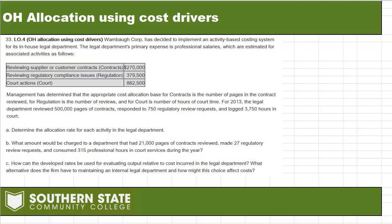If it uses a lot of technology, it generates a lot of overhead, and generally speaking, ABC is going to be a better map for what you're trying to do. In this problem, we have Wambaugh Corp., and they have an in-house legal department, and they've gathered some different costs for that in-house legal department.